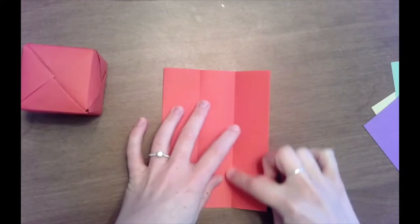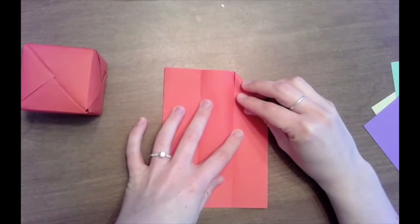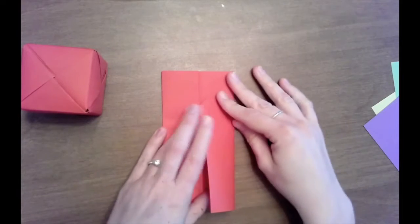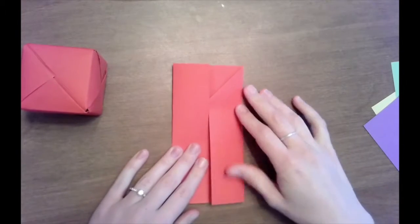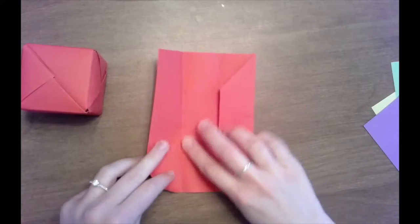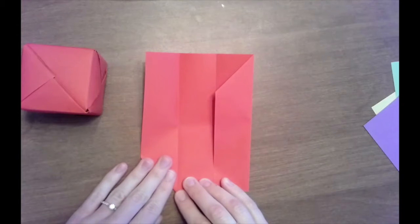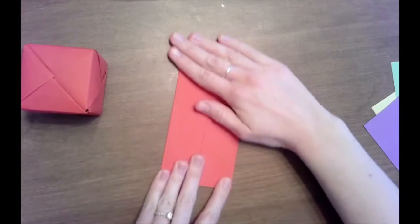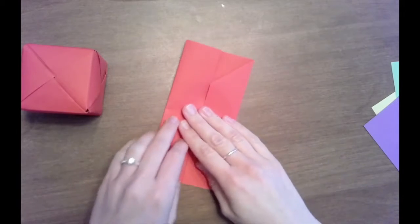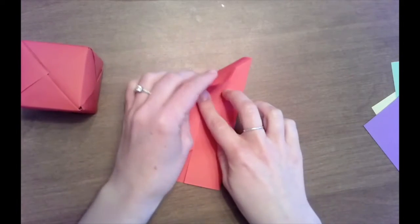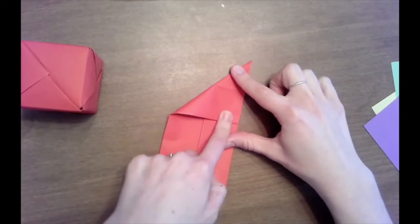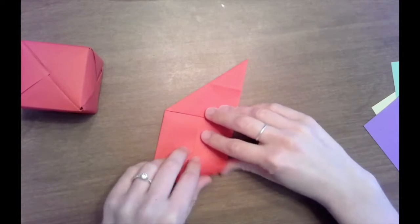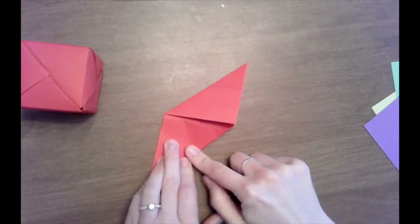Take the top right corner and line it up with the next crease to create a small little triangle. Then fold that door closed. Go to your bottom left corner. And fold that one in along the next crease to create a little triangle. And close that door. Then take the top left corner and fold it all the way across so that it meets the other side and creates a big triangle. Then take the bottom right corner and fold that one all the way across.